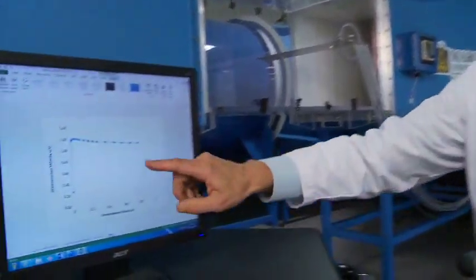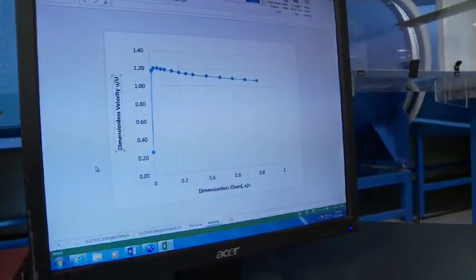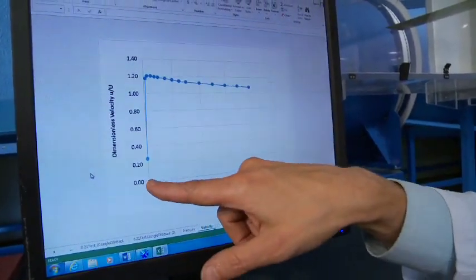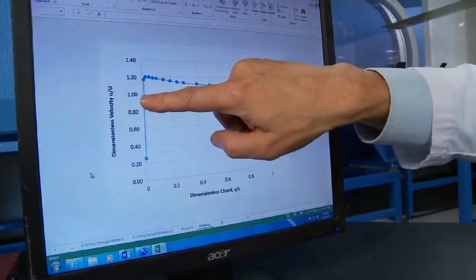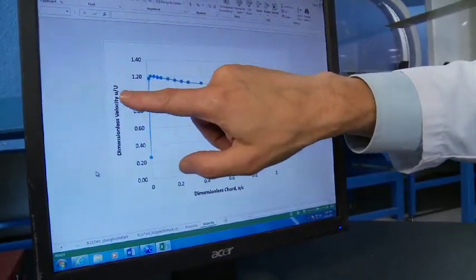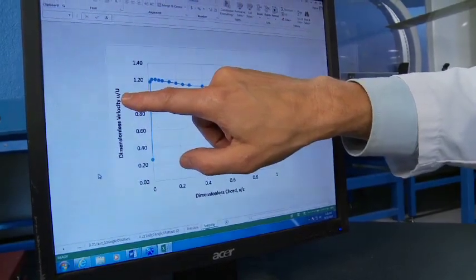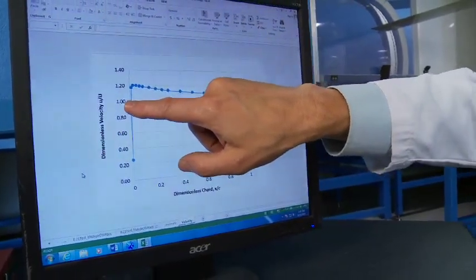Similarly, the velocity should be just the inverse of the pressure. So what we see in velocity is, we see that at the stagnation location, the velocity is almost zero. The sharp rise in velocity. This is dimensionless velocity, which is important. So this is velocity divided by the free stream velocity. So it exceeds 1,